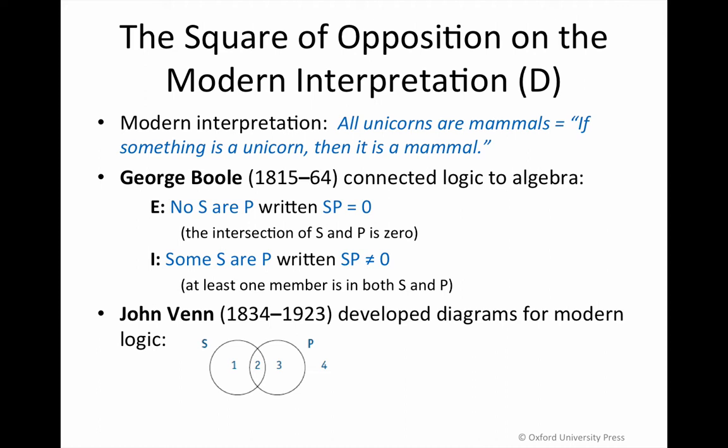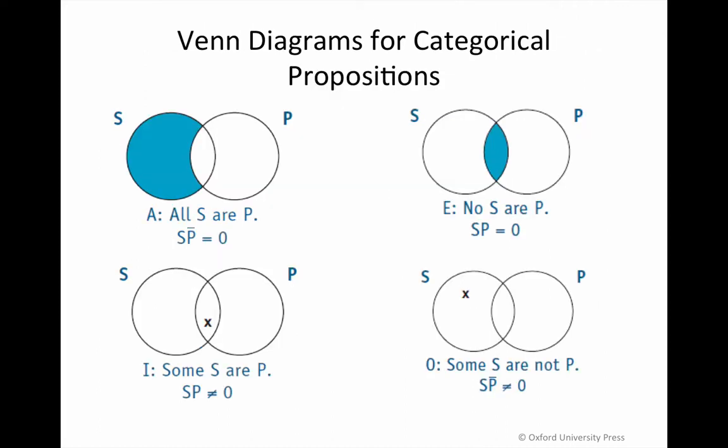Let's look at how you can diagram each of these claims. In the upper left-hand corner, you have a universal affirmative, an A proposition. In the upper right-hand corner, you have a universal negative, or E proposition. In the lower left-hand corner, you have a particular affirmative, or I proposition. And in the lower right-hand corner, you have the O proposition, that is the particular negative.